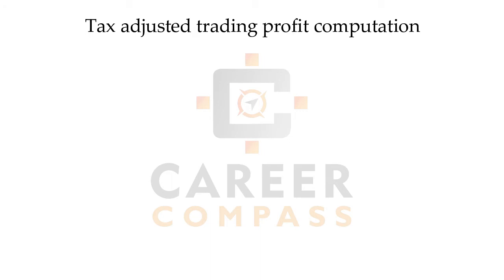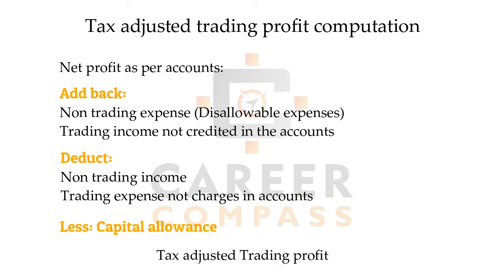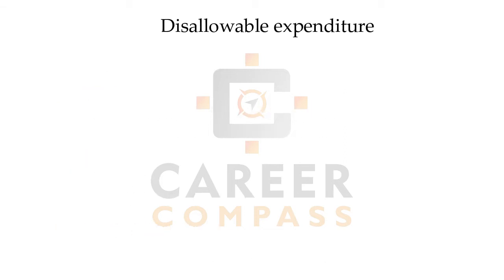Here is the pro forma to calculate the final taxable trading profit. We start with the accounting net profit and then make the adjustments below to derive the final taxable amount. Majorly, we will have to adjust disallowable expenditures — those which are deducted in the P&L but not allowed for tax purposes — and add back those expenditures disallowed by HMRC.